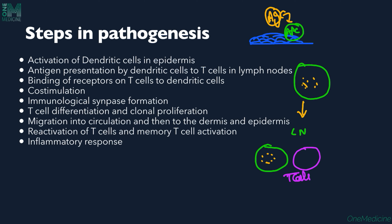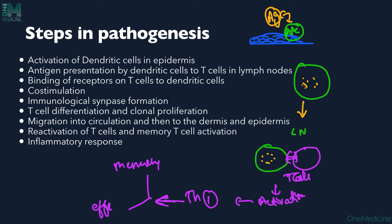In psoriasis, we basically have Th1 type of activation. T helper cell 1 related cytokines will be released, and these T-cells differentiate to form memory T-cells and effector T-cells. Both of these will go into the circulation, and through the dermal vessels they come into the dermis, then migrate upwards towards the epidermis, causing inflammatory changes in both the epidermis and dermis.